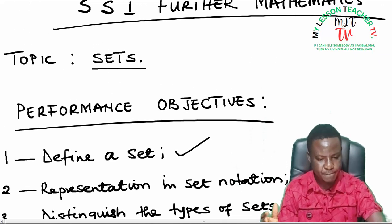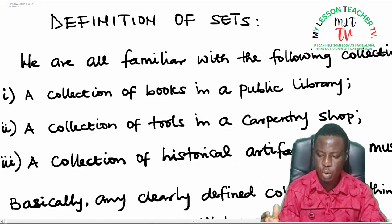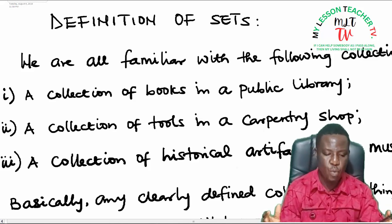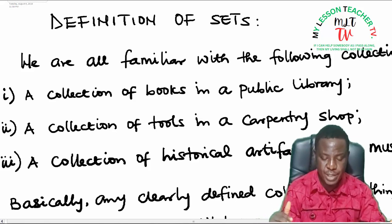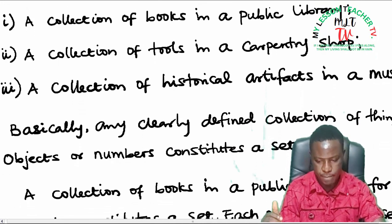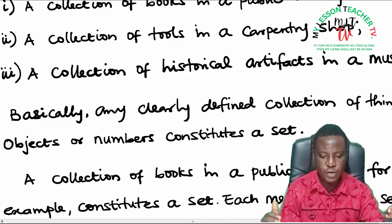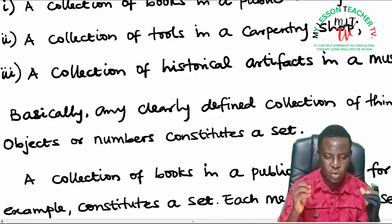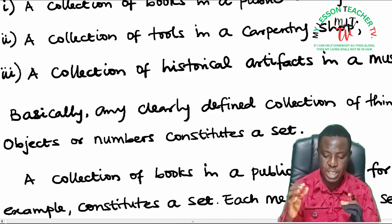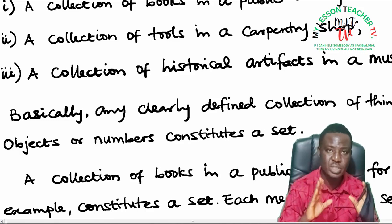So what is a set? We are all familiar with the following collections: a collection of books in a public library, a collection of tools in a carpentry shop, a collection of historical artifacts in a museum, etc. Basically, any clearly defined collection of things, objects or numbers constitutes a set.